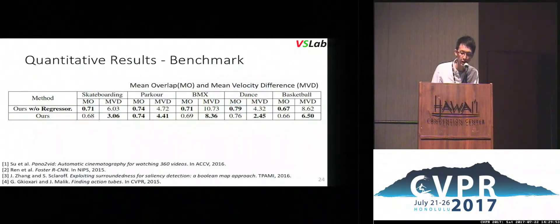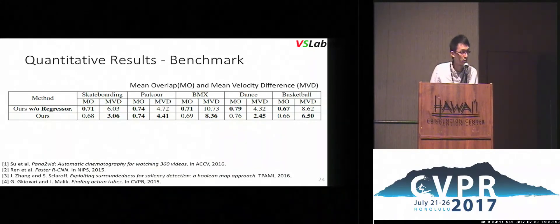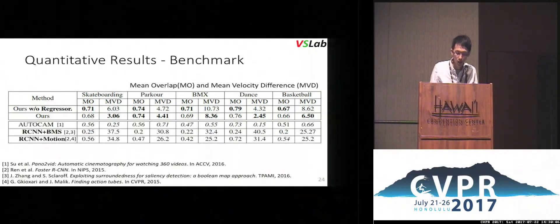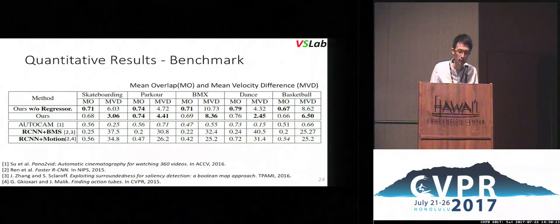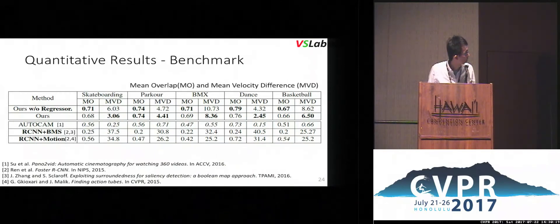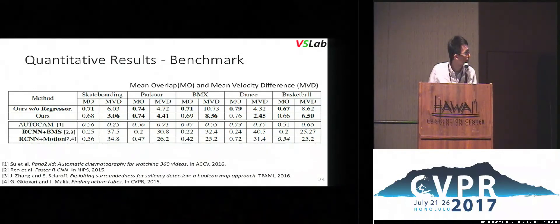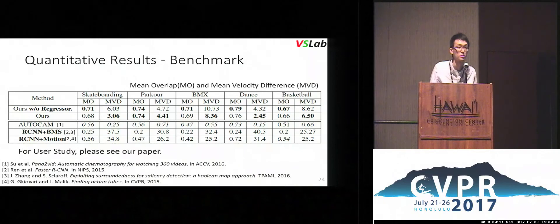From the benchmark table, our full model is much smoother than our variant without the regressor, while keeping similar mean overlap performance. Our full model is also more accurate, and our variants are both more accurate than all baselines, including the strong baseline AutoCam and detection plus saliency or motion baselines. A user study also shows that our full model significantly outperforms any other methods listed. For more details, please see our paper.